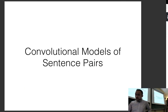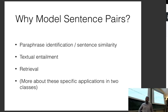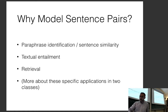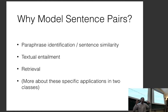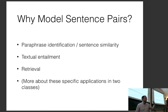The basic idea of convolutional models for sentence pairs is that there are lots of tasks that want us to reason over pairs of sentences or texts. Some examples include paraphrase identification or sentence similarity — given two sentences, we want to determine whether they're paraphrases of each other, whether they mean the same thing. Another example is textual entailment: whether the information in one sentence is entailed by another.